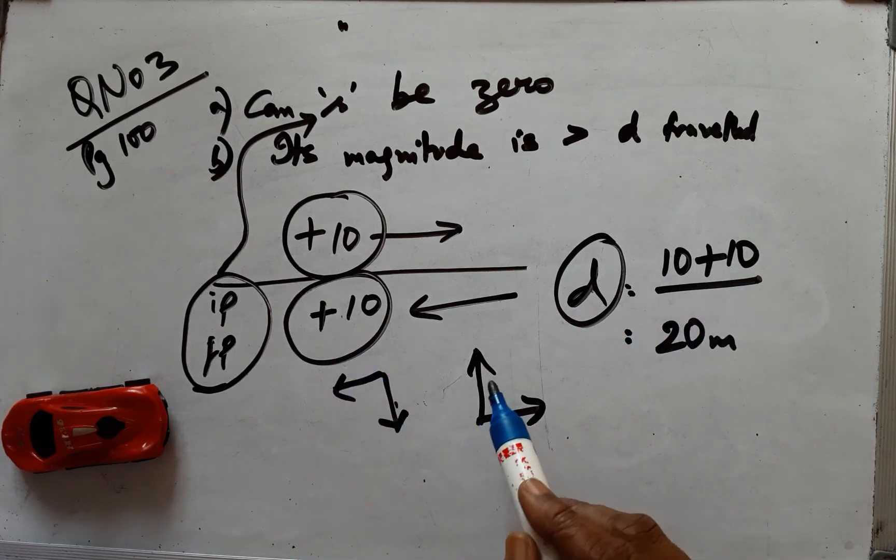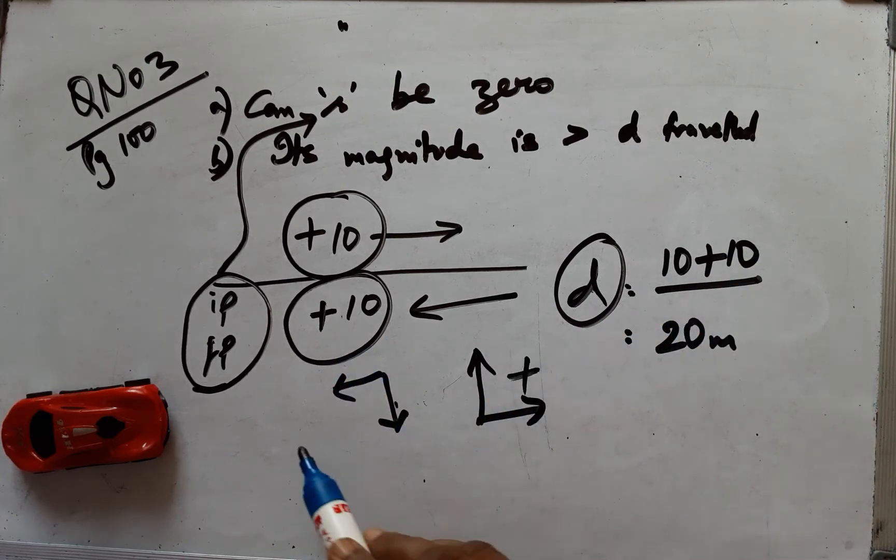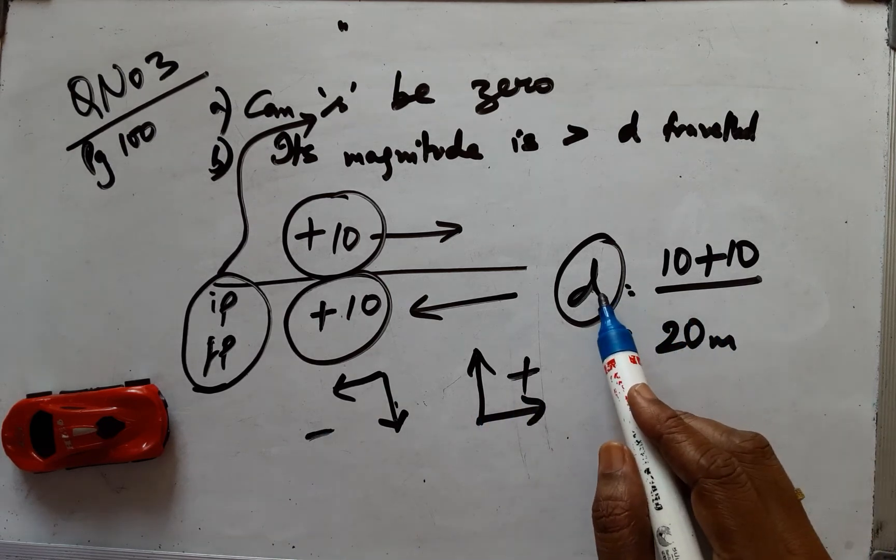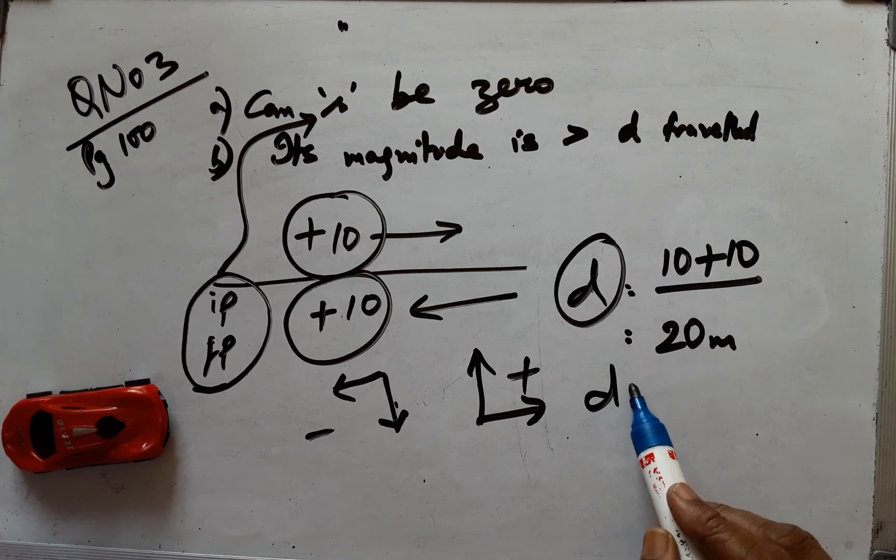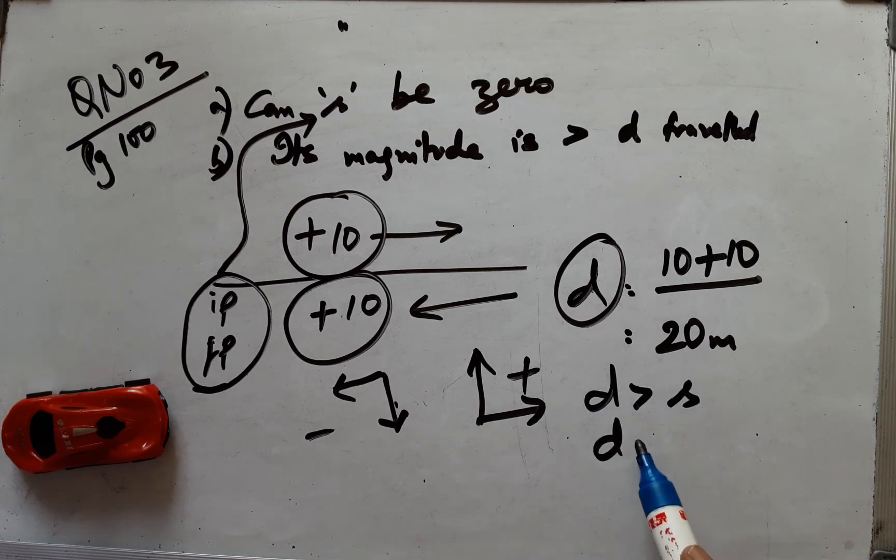Whereas for displacement, please remember this is positive and this is minus. Therefore, distance can be greater than displacement. Distance can be equal to displacement, but distance is never less than displacement.